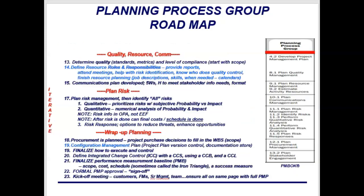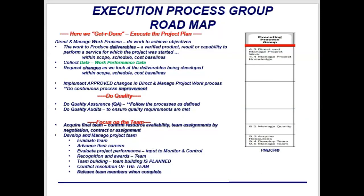At that point I have a good sense of the iron triangle. Continuing, I finish quality, resource, and communications planning. Then I plan risk — including qualitative risk assessment, which is a subjective prioritization of risks, and quantitative assessment, which is numerical probability and impact, focusing on risks with the biggest probability and impact that could really devastate the project. Then I do wrap-up planning: finalize the plan, ensure the integrated change control process is done, get it signed off by the sponsor, and hold a kickoff meeting.